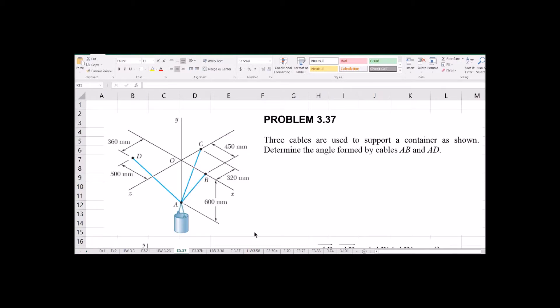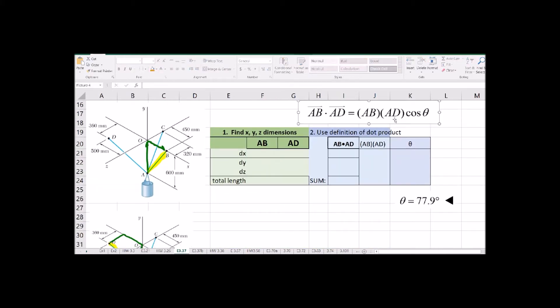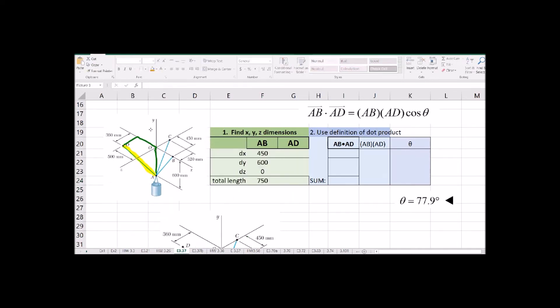Here's another example of using that dot product in Excel, just to show you how nice it is to set it up in Excel. Once again, we're going to break our vectors into their X, Y, Z components, just going from the tail to the head of these things. Get the length of it, square root of dx squared plus dy squared plus dz squared. So there's our first cable.